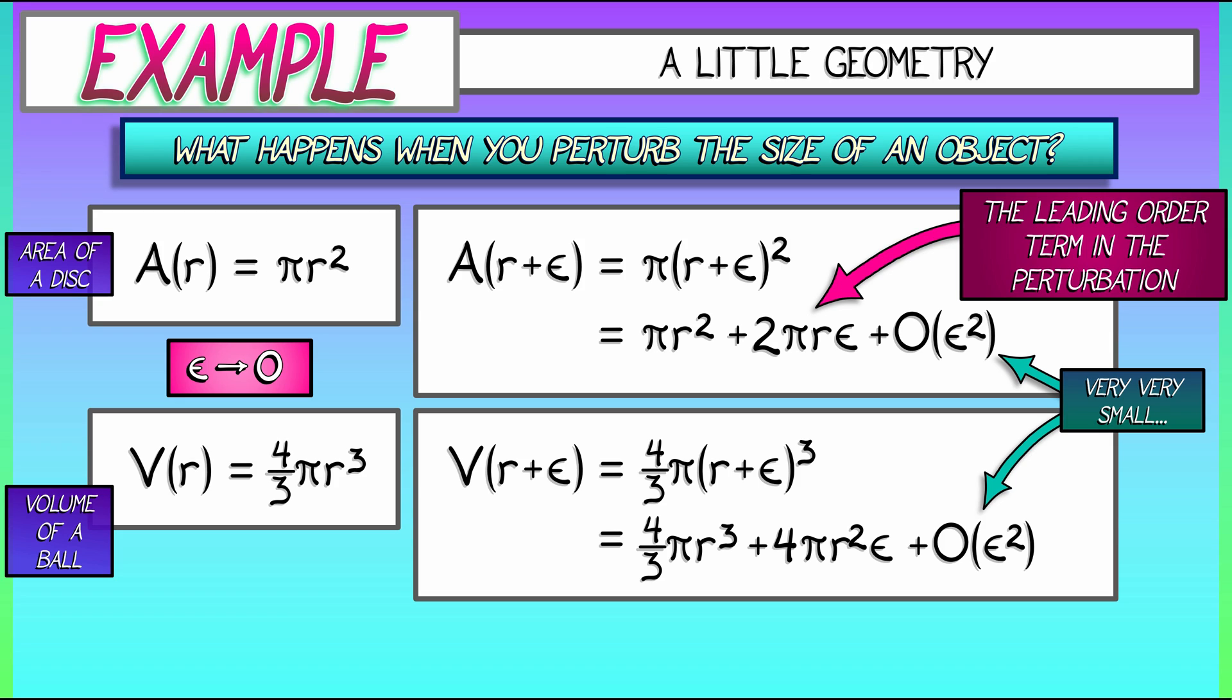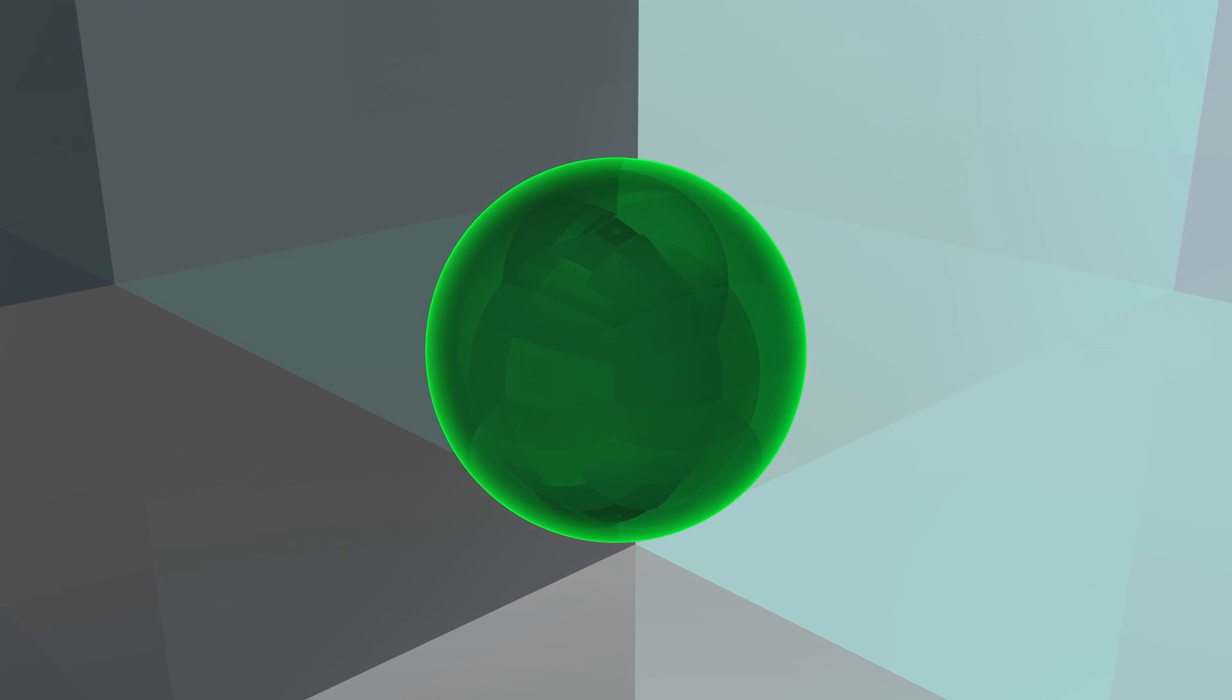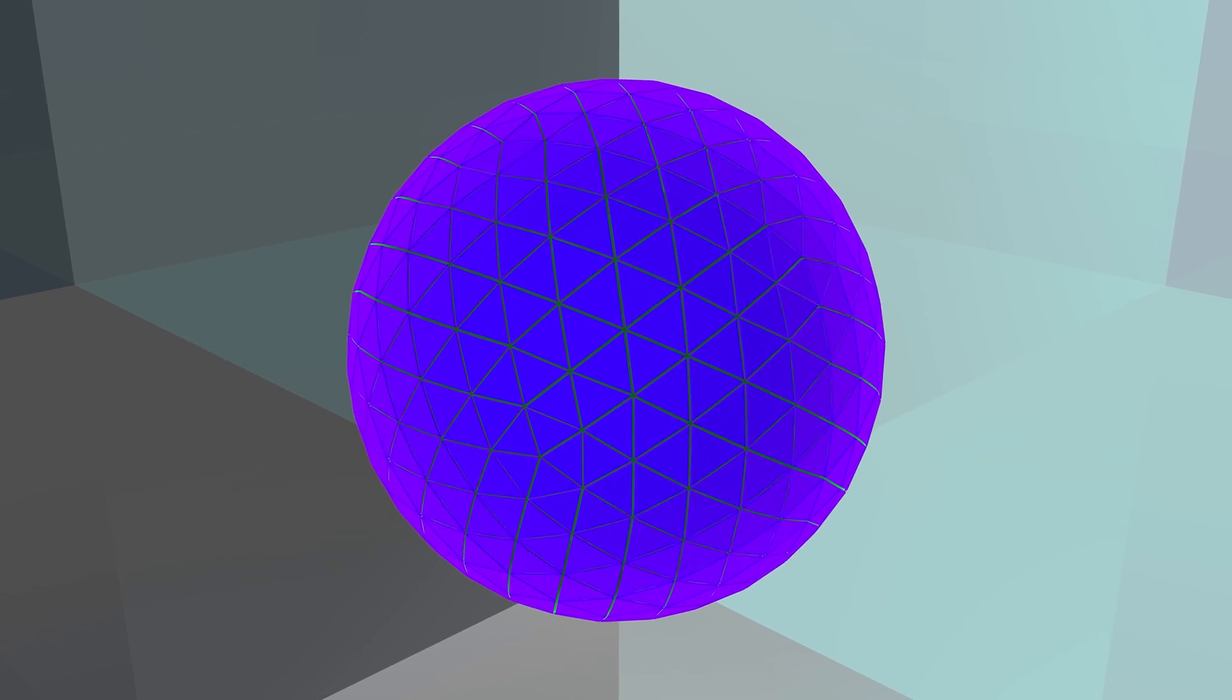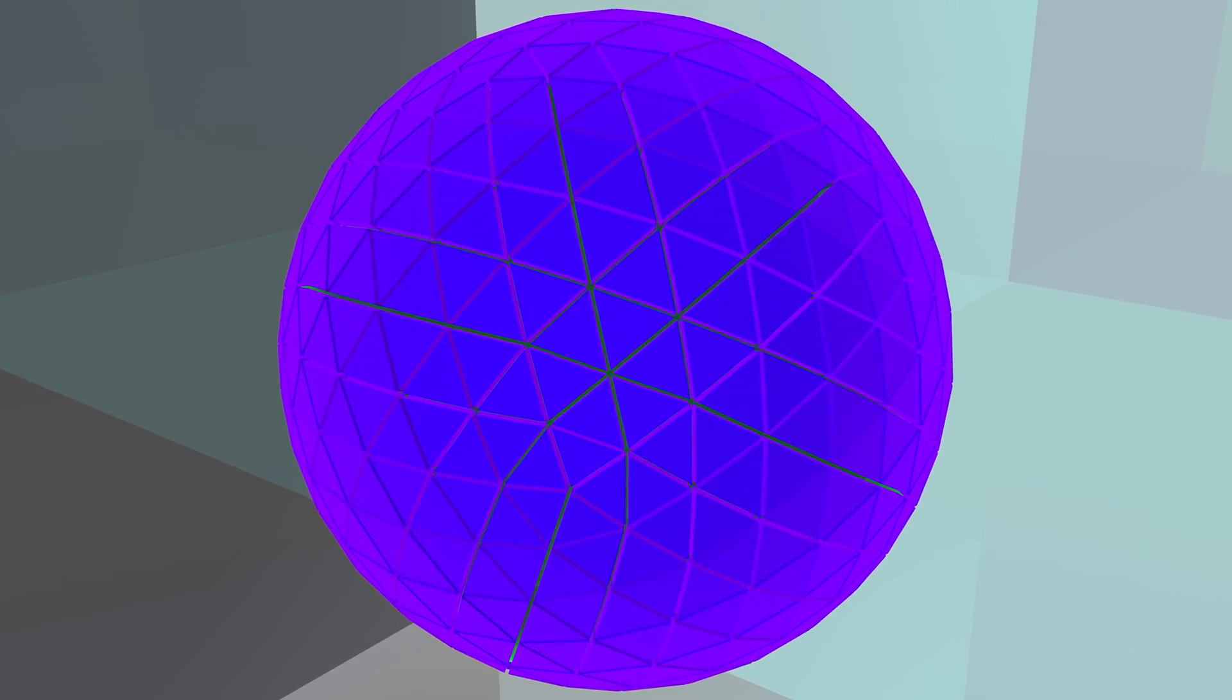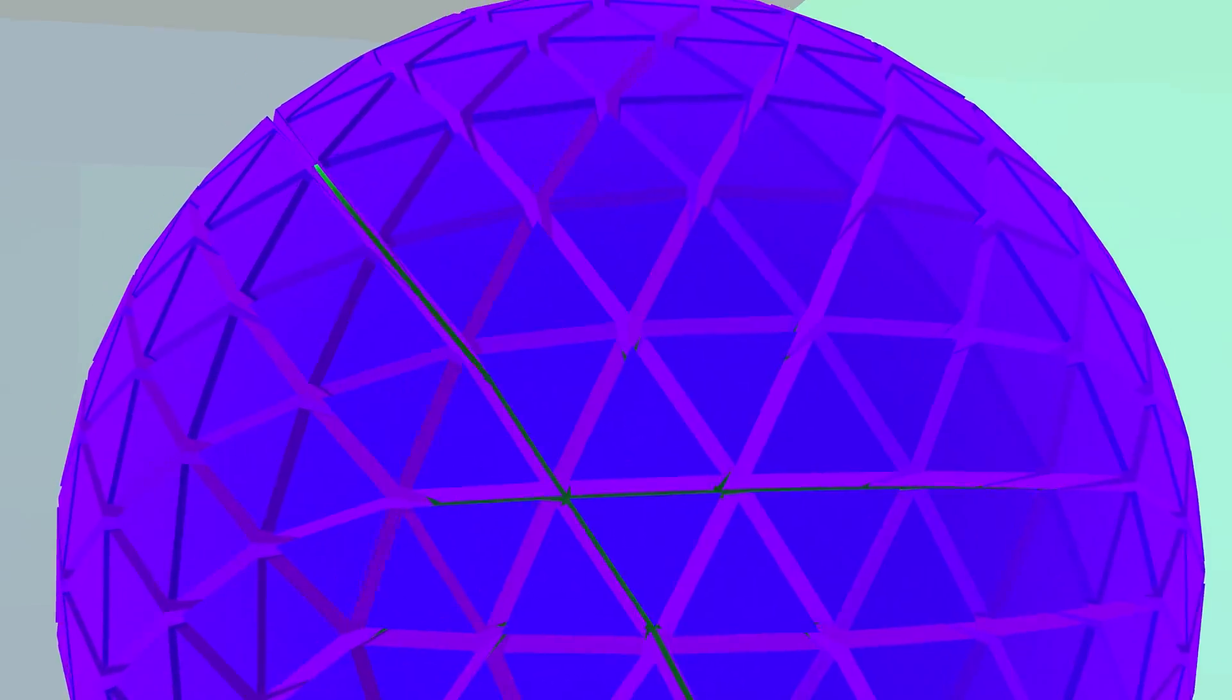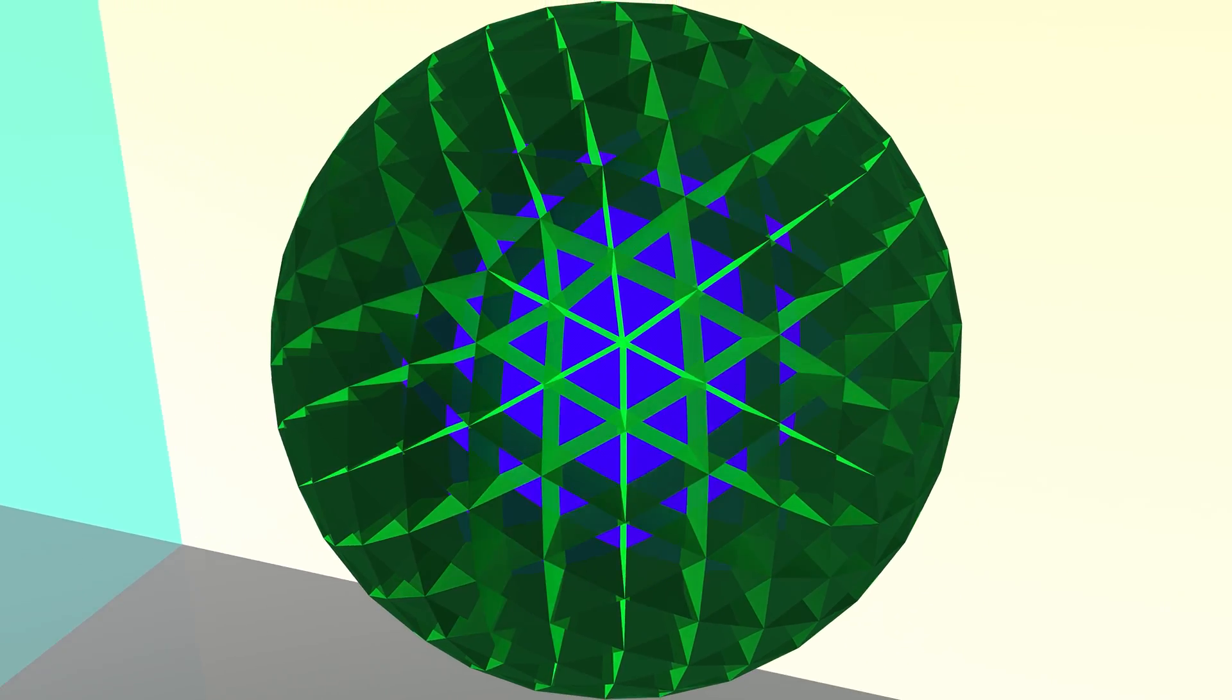And once again, we can see that the leading order term in the perturbation to the volume is really the surface area of the ball times epsilon. And we can think the same way that we thought before. I take this sphere and I've got all these little surface area patches. I can expand those out to little solid prisms of height epsilon, and that's most of the change in volume. Now, there's the leftover stuff, but in the limit as epsilon goes to zero, that stuff is of order epsilon squared.